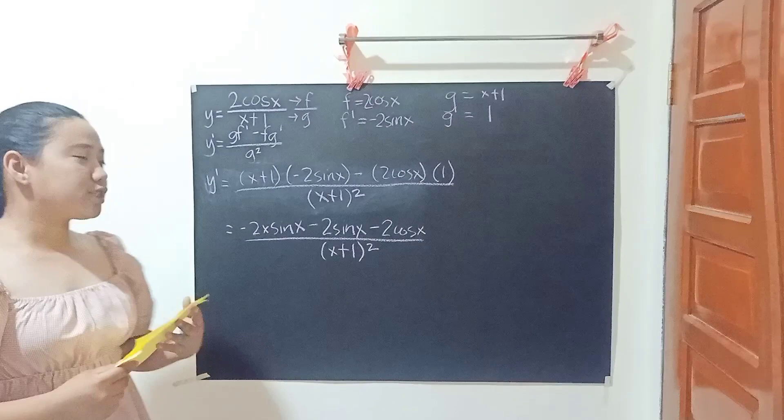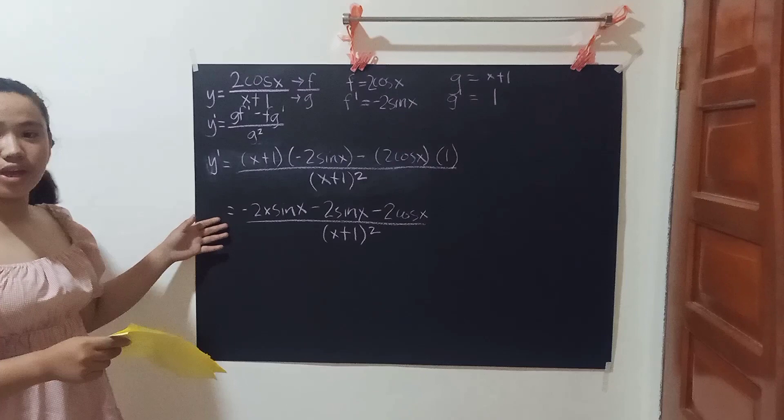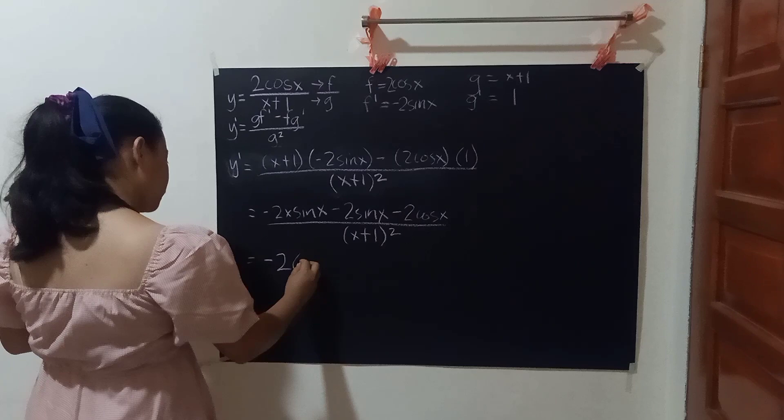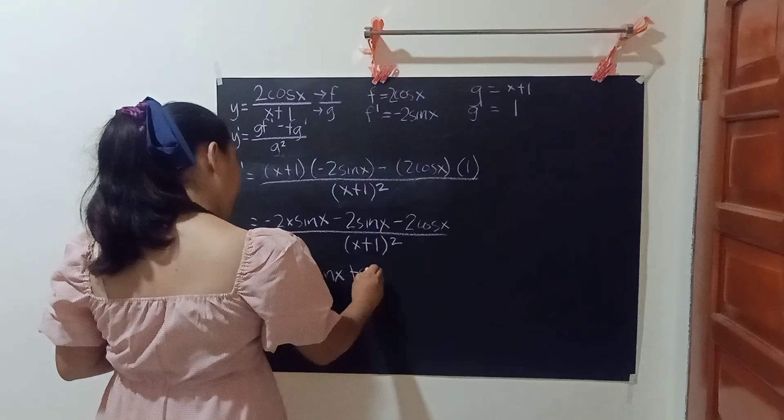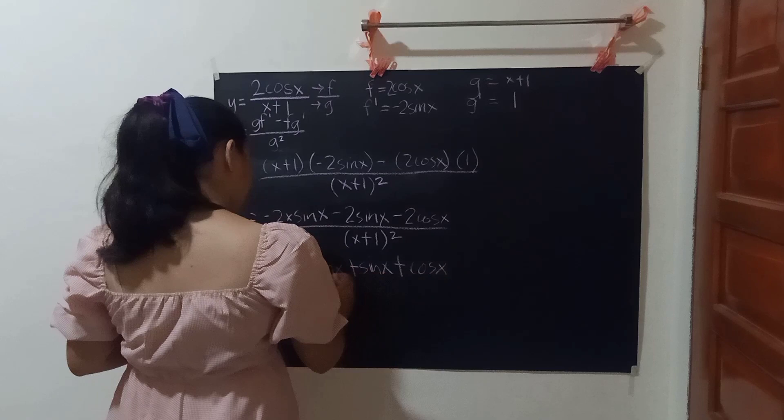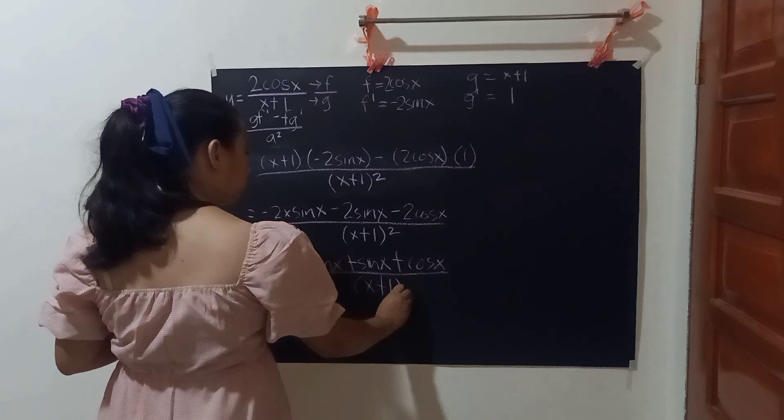Simplify. Since we have a common factor of negative 2, we can move it to the front. So we have negative 2 times (x·sin(x) plus sin(x) plus cos(x)) over, copy the denominator, (x plus 1) to the second power.